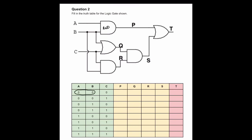Looking at A and B in our table: two zeros into an AND gate produce a zero, since an AND gate only produces a one if both inputs are one. Once we've worked through all scenarios for P, we look at Q. Q is the product of an OR gate, which produces a one if either input is one or both. Q takes its inputs from B and C, so if either is a one, Q will produce a one. The Q outputs are: zero, one, one, one, one, zero, one, one, one.